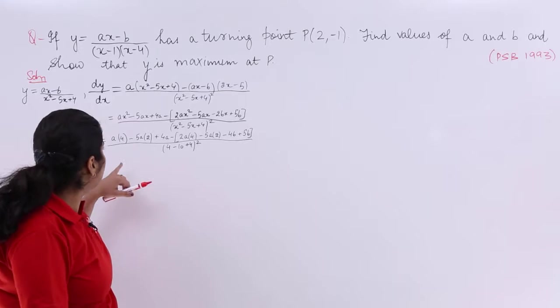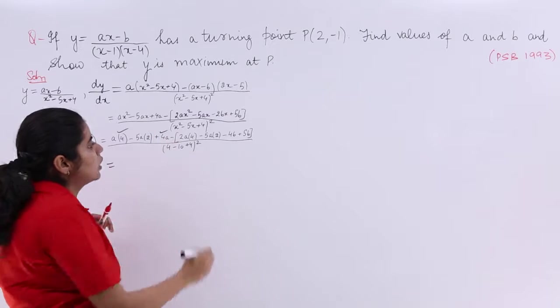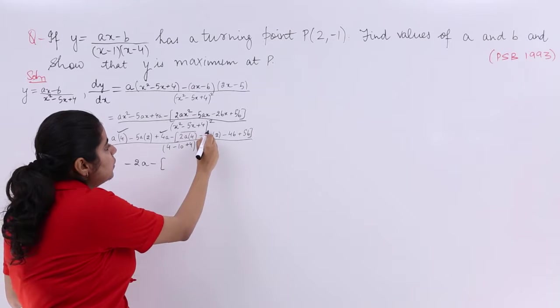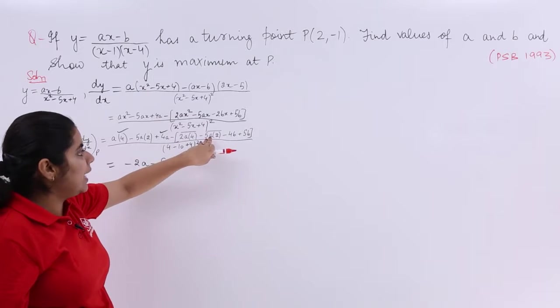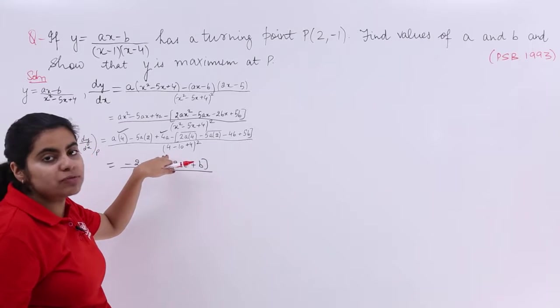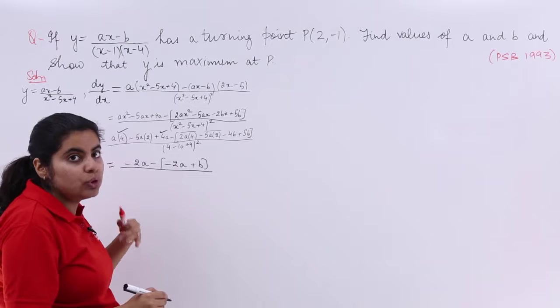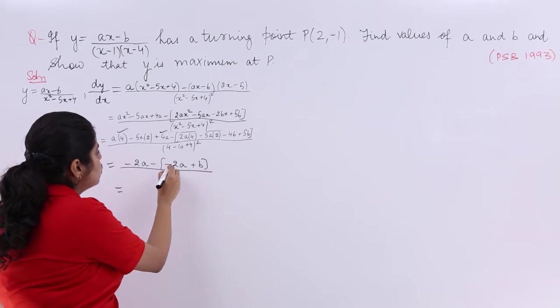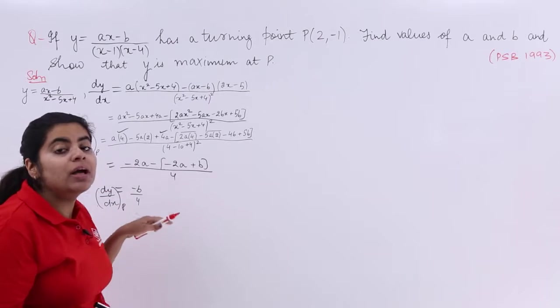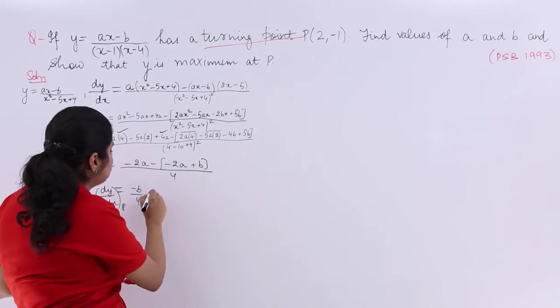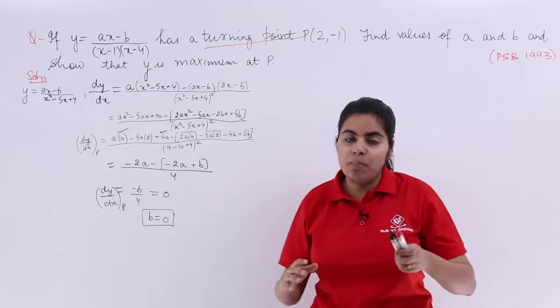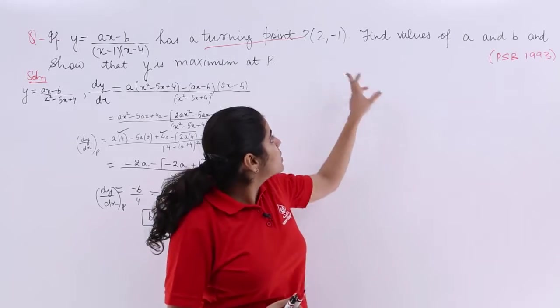4a minus 10a, here also 4a, here also 4a, it is nothing but 8a. 8a minus 10a is minus 2a. And in the bracket what do we have? 8a from here, here also it is 10a. So 8a minus 10a is minus 2a plus b. In the denominator let us see: 4 plus 4 makes it 8, 8 minus 10 is minus 2. Minus 2 whole square is 4. And it is minus 2a plus 2a getting cancelled. So it is nothing but minus b upon 4. And now you know dy by dx at p we were computing.